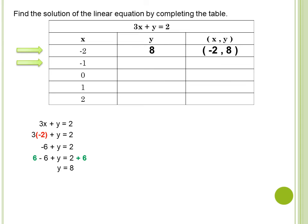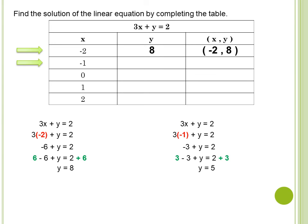For the second solution where x is negative 1: copy the equation and substitute x with negative 1, giving 3 times negative 1 plus y equals 2. Simplifying: negative 3 plus y equals 2. Using APE, add 3 to both sides, so y equals 5. The solution is (-1, 5). Now I will give you some time to find the solutions when x is 0, 1, and 2.